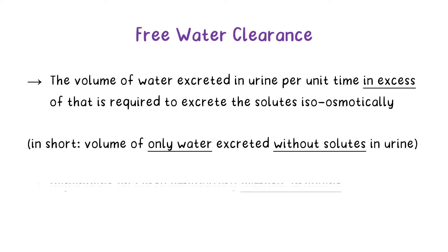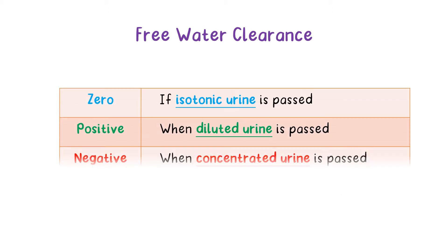This volume depends on the corticomedullary osmotic gradient — the area with a higher osmotic gradient is a hyperosmolar site, and water will be drawn towards it. Free water clearance is zero if there is isotonic urine, positive when diluted urine is passed, and negative when concentrated urine is passed.